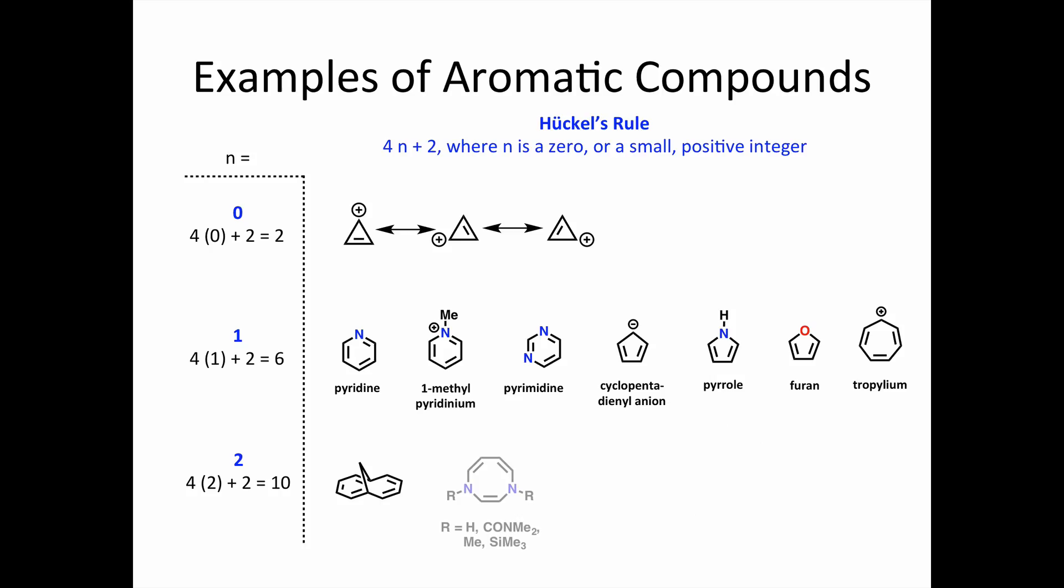Returning to our chart, this 8-membered ring with 2 nitrogen atoms is another example of a 10-pi electron aromatic compound. Because both nitrogen lone pairs are needed to complete the pi system, they have to be substituted with electron-donating groups. If the groups are too electron withdrawing, the lone pairs are pulled out of the pi system. This molecule twists because aromatic stabilization can no longer overcome steric strain.